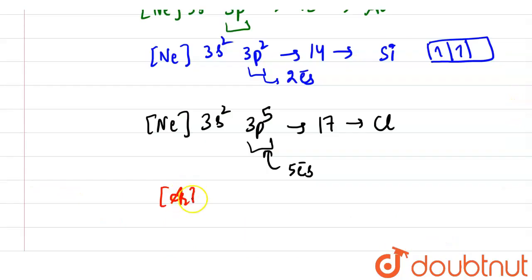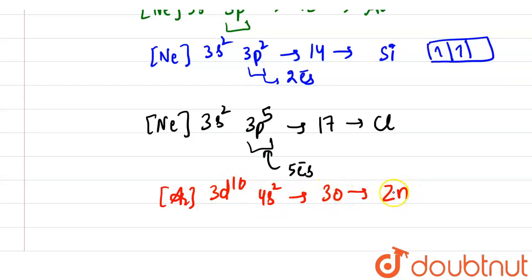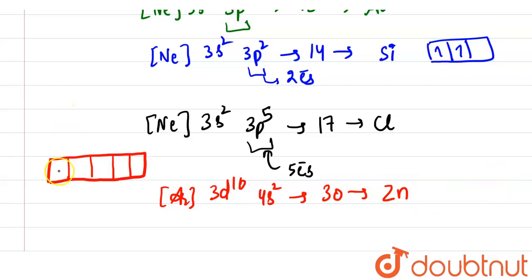Option four is [Ar] 3d10 4s2. This corresponds to atomic number 30, and the element is zinc. As we can see, the d orbital has 10 electrons — 1, 2, 3, 4, 5, 6, 7, 8, 9, 10 — which means it is a fully filled orbital.